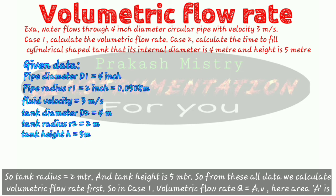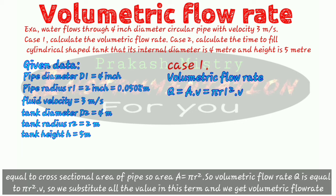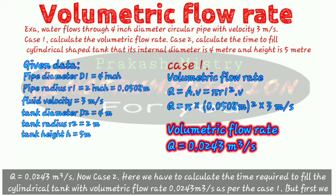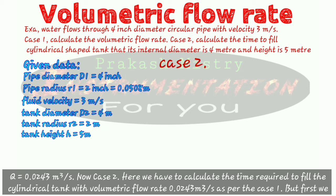From all this data we calculate the volumetric flow rate. In case one, volumetric flow rate Q equals A times V. The area A is the cross section area of the pipe, so A equals pi R squared. Therefore Q equals pi R squared times V. Substituting all values, the volumetric flow rate Q equals 0.0243 cubic meters per second.